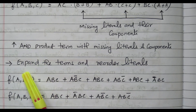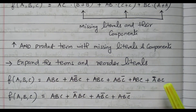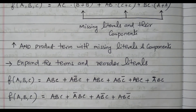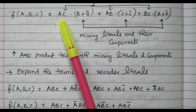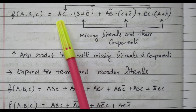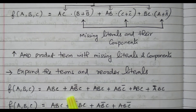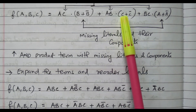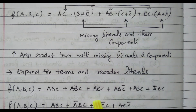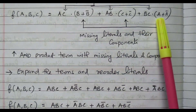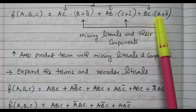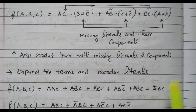Expanding: AC(B + B̄) gives ABC + AB̄C. AB(C + C̄) gives ABC + ABC̄. BC(A + Ā) gives ABC + ĀBC. So after expanding all terms, we have: ABC + AB̄C + ABC + ABC̄ + ABC + ĀBC.